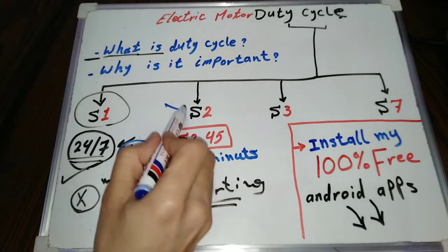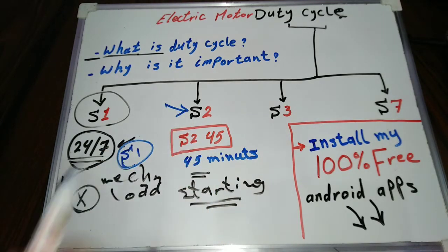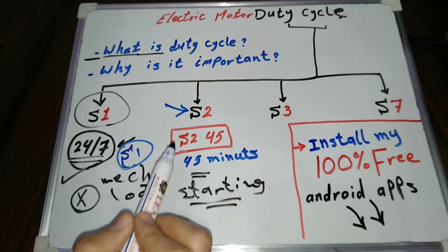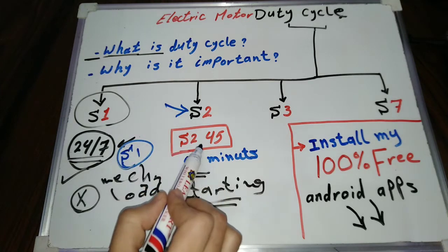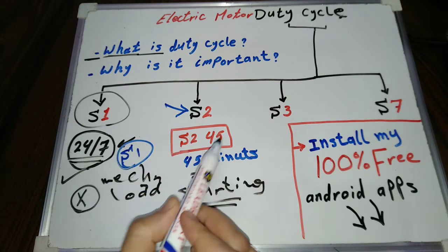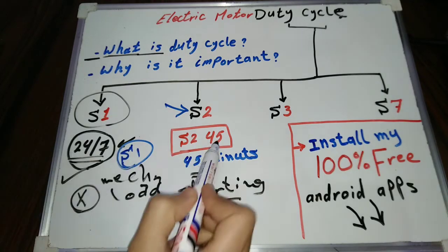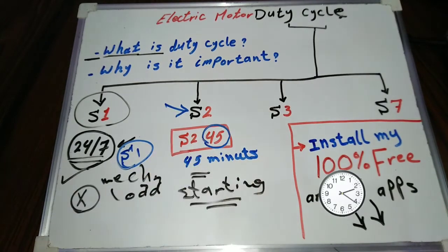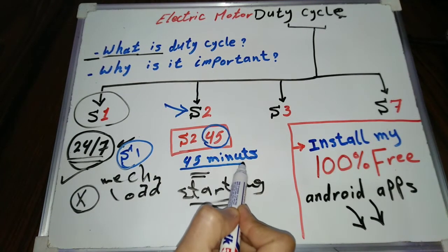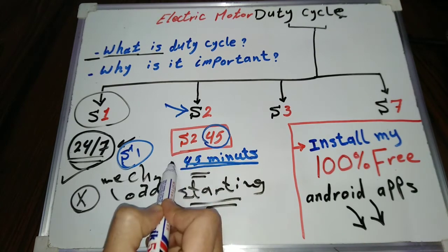Short time cycle, S2, this duty cycle is similar to S1. I mean, it's continuous too, but with short periods of time. The motor has rest periods, during the rest its temperature decreases to the ambient temperature. The S2 is followed by the motor working period number of minutes. For example, S2 45 is a motor duty cycle of 45 minutes.